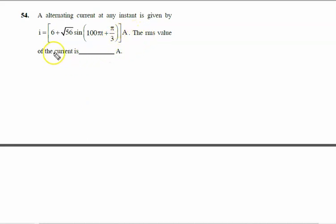An alternating current at any instant is given by i equals 6 plus root 56 sine 100πt plus π/3 ampere. To find the RMS value of the current, the shortcut is: if i equals